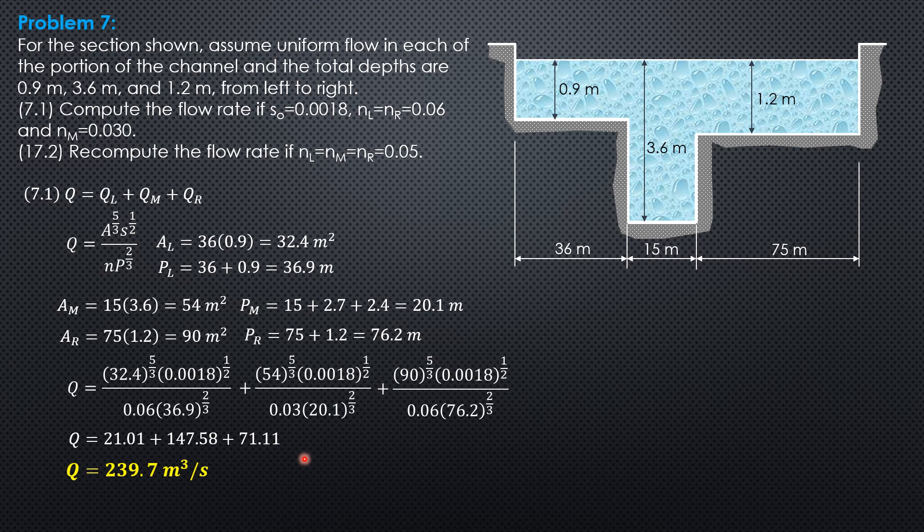Then for the second question, Q is same: Q left, Q middle, Q right. But this time N is common to all portions of the channel.